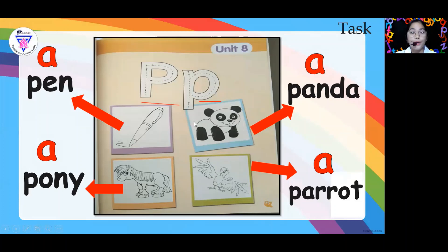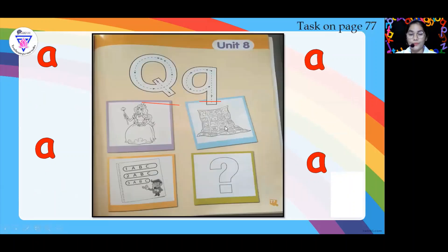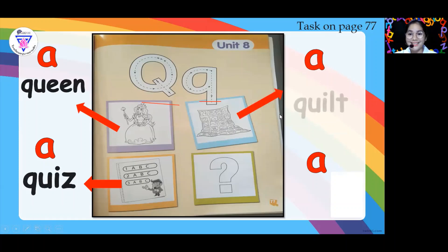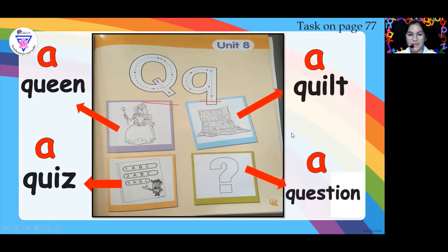That is p — pen. Very good. And what is the sound of the letter Q? It's q — queen. Very good. We also have q — quilt. Good job. And we also have q — question. Very good, so that is question.